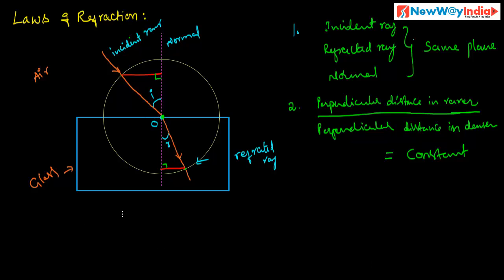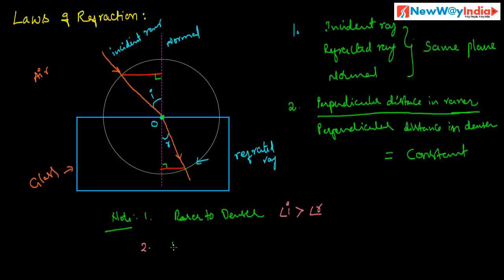Here you have to note two important points. One: if a light ray passes from a rarer medium to a denser medium, the angle of incidence is always greater than the angle of refraction. Second: if a light ray passes from a denser medium to a rarer medium, the angle of incidence is always less than the angle of refraction.